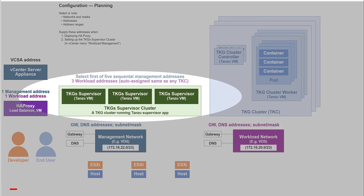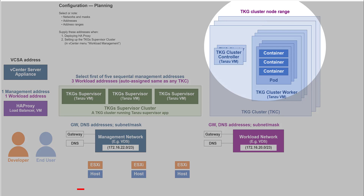The supervisor cluster has three VMs, but will need five addresses on the management network: three for the VMs, one for maintenance, and an extra redundant one for availability. These must be five sequential static addresses never changed by a DHCP server. During configuration, you will enter the first of these as the starting IP address. Again, you can work with your network admin to choose addresses not already in use. The supervisor will also need three addresses on the workload network, but you don't have to choose them — services will assign them for you. All of the Tanzu VMs, including the three VMs in the supervisor cluster, will be assigned addresses from the workload network, and you have to choose and provide a range of addresses.